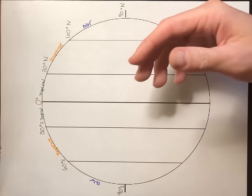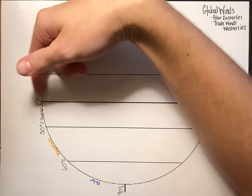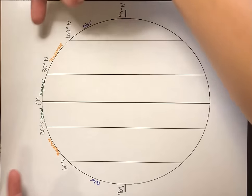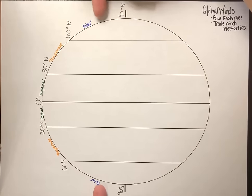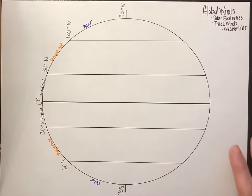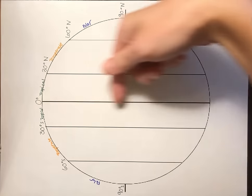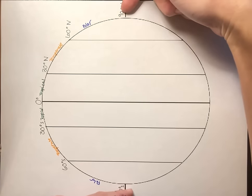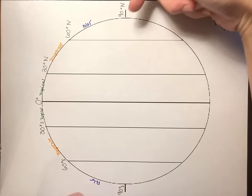For climate zones, remember tropical gets direct sunlight shining straight on, so it's quite warm there. The polar climate zones have light coming in and hitting more at an angle because of the curvature of the earth, so polar climate zones are very cold. The earth is warm in the middle and cold at the top and bottom, and because of that difference in temperature across our planet, we have wind.